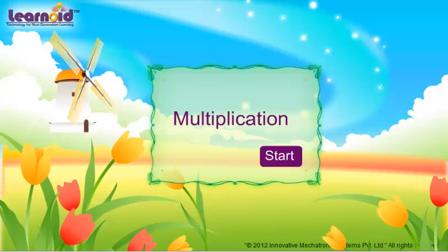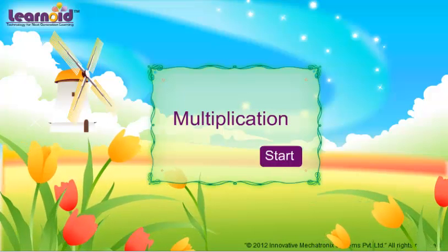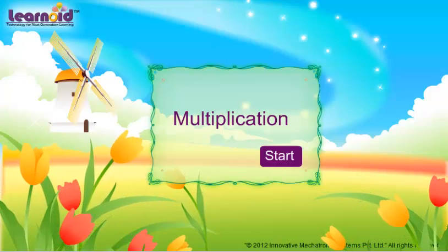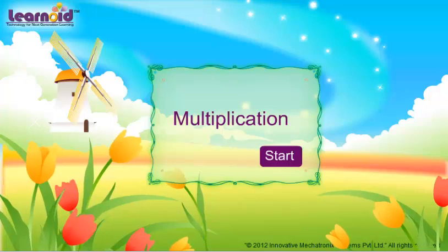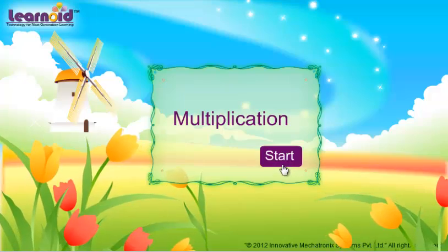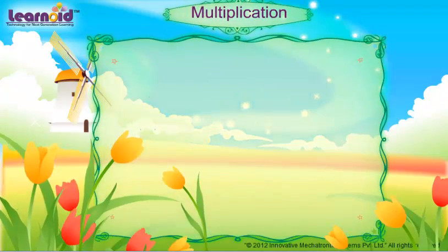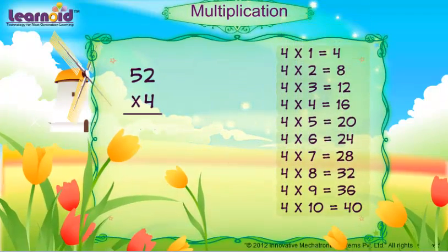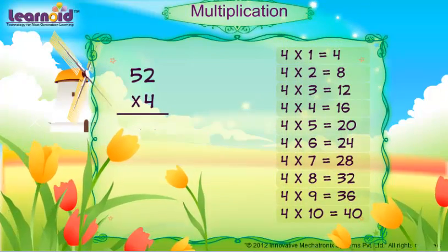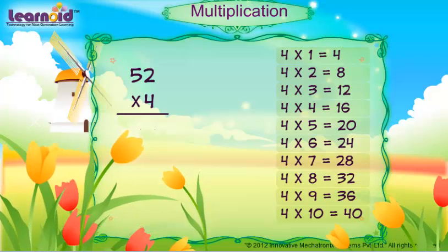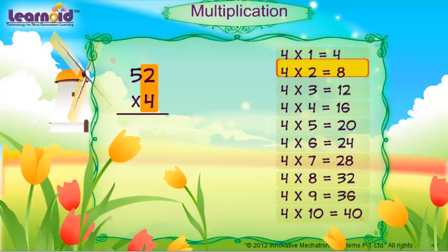Today we will learn how to multiply two digits with one digit. We have to multiply 52 with 4.